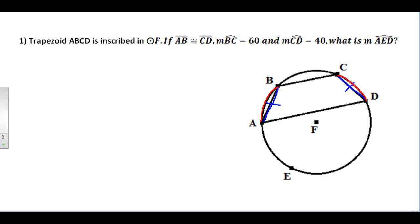We're told that arc BC is 60 degrees. Well, if this arc is 60 degrees, and arc CD is 40 degrees. Well, if this arc is 40 degrees, that means arc AB also needs to be 40 degrees.